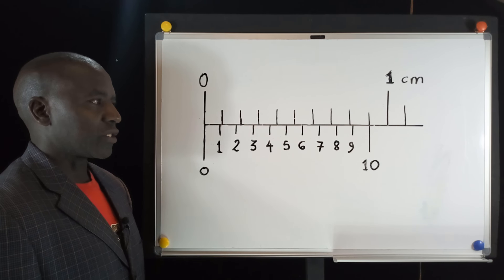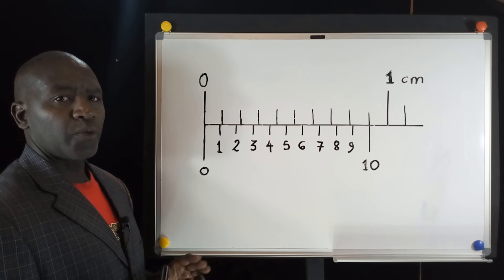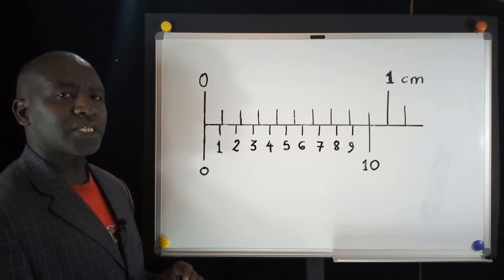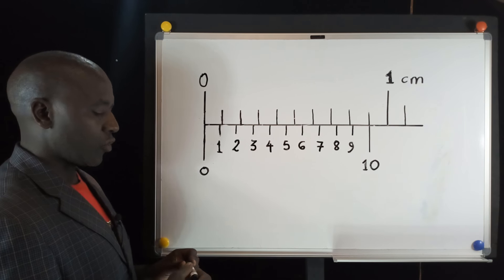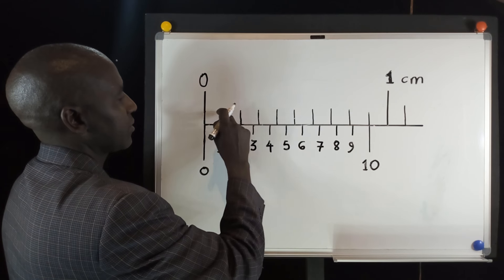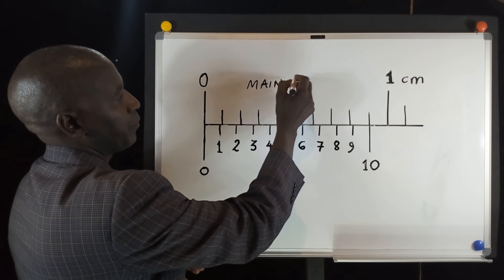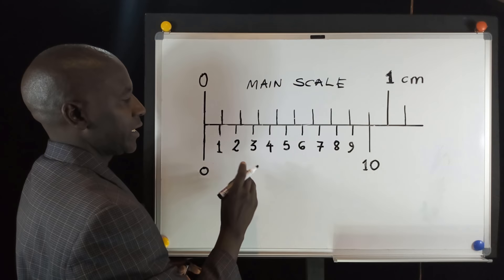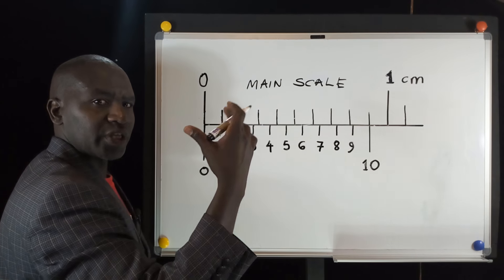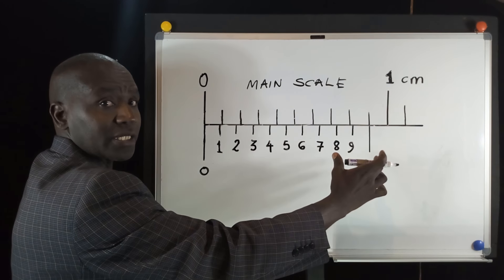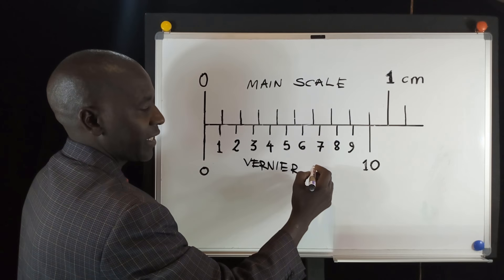Hello and welcome to this lesson. In this lesson, I'm going to look at the Vernier scale. We want to understand the idea of the least count. The Vernier calipers has basically two scales: it's got a main scale, which is the upper scale, and it's got a lower scale which slides along the main scale, referred to as the Vernier scale.